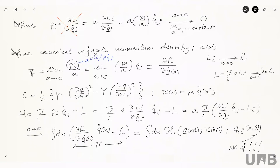In practice, people don't talk about densities — we've already said this several times — and that also happens here with the Hamiltonian formalism. So people call pi the canonical conjugate momentum, not density, and this h is sometimes called the Hamiltonian, not the Hamiltonian density.